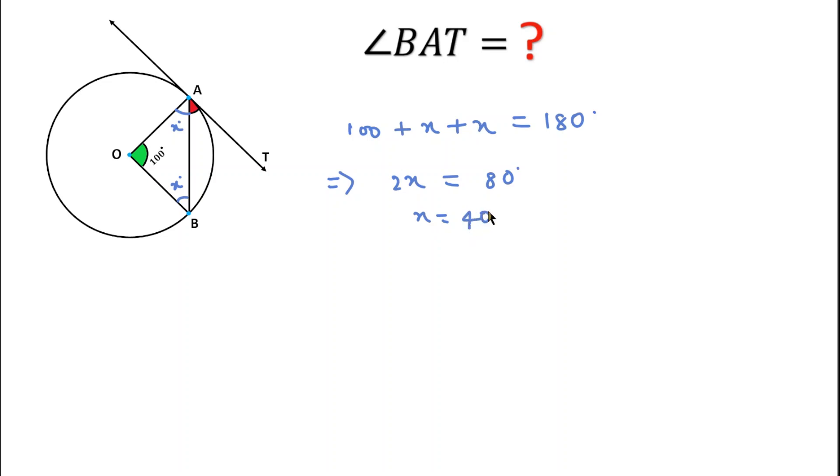So this means x equals 40 degrees. And we know also radius is perpendicular on AT. This is a theorem actually, radius is always perpendicular on tangent.